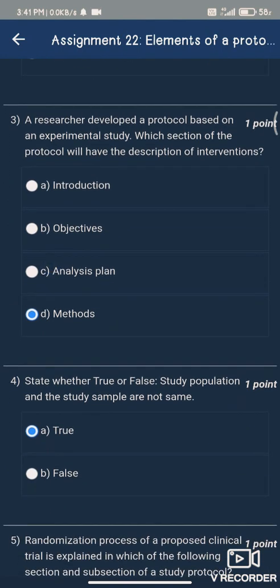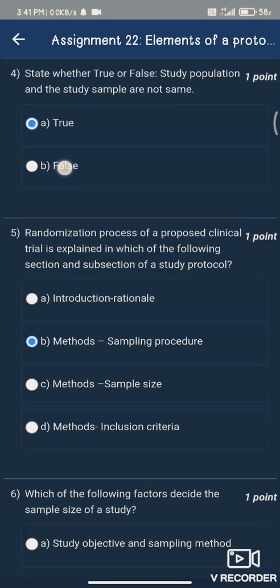Question number three, the answer is option D, Methods. Question number four, the answer is option A. Question number five, the answer is option B, Methods Sampling Procedure.